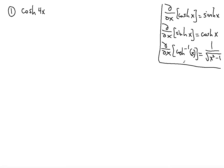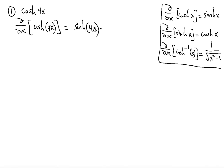For this first example, we take the derivative of cosh first, then the derivative of the inside using the chain rule. Taking the derivative of cosh gives us sinh of 4x, multiplied by the derivative of the inside which is 4. So the result is 4 sinh(4x).